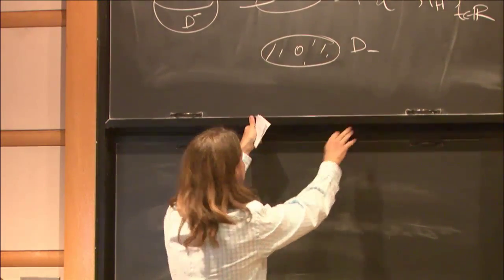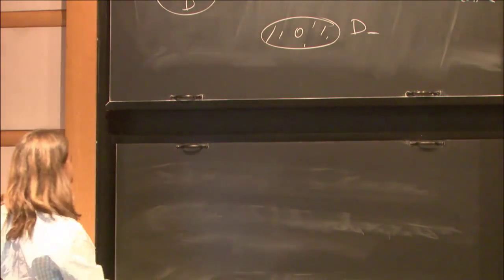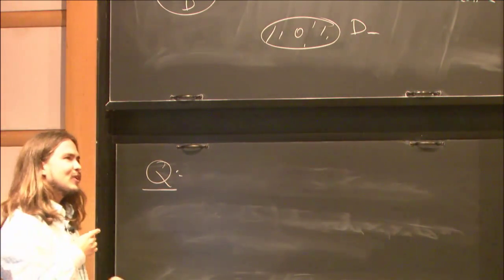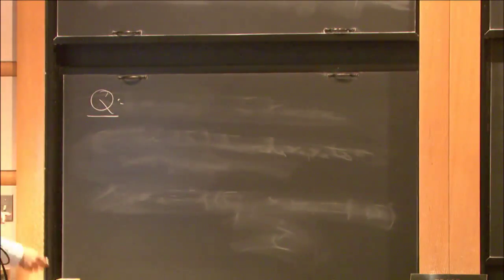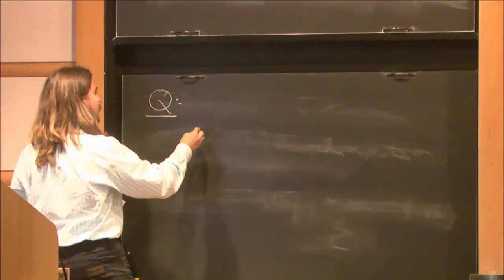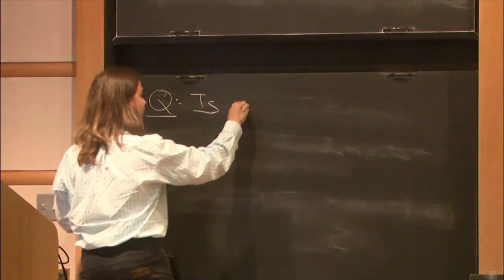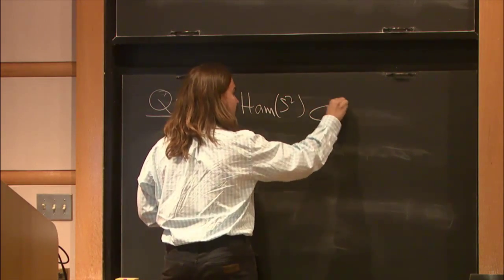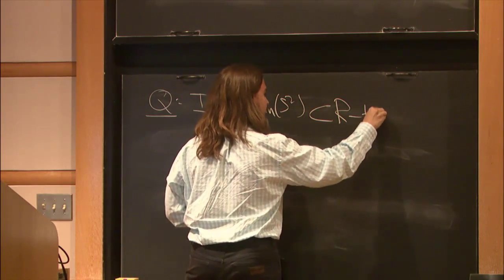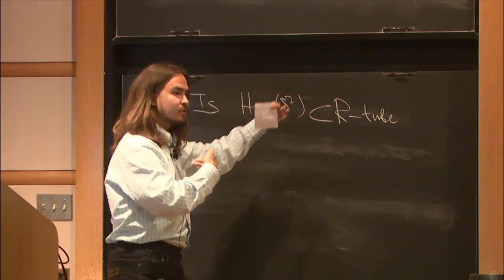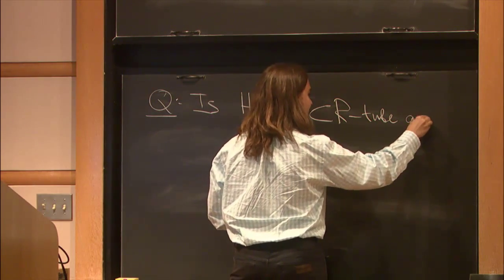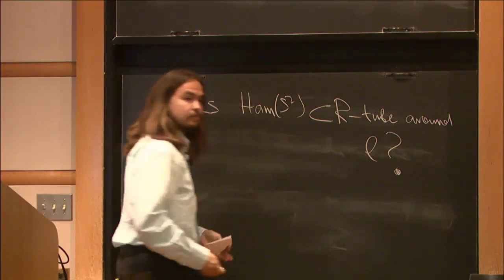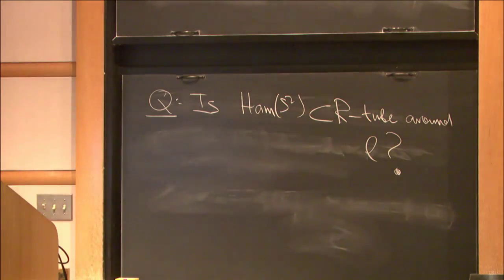Then there is a question of Polterovic and Kapovich from 2006. Is it true that the whole Hamiltonian group is contained in the R-tube, so an R-neighborhood, around this L? This is completely open.